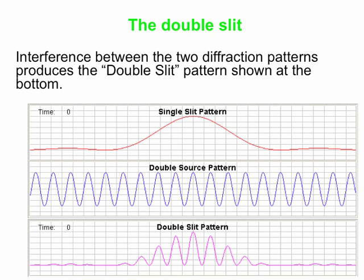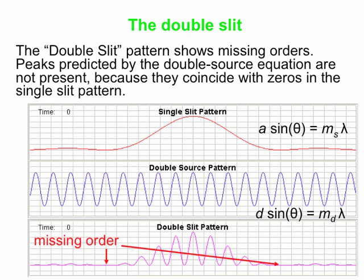And again, interference between the two diffraction patterns, one from each slit, produces the double slit pattern. And the double slit pattern actually shows what are called missing orders. So these are places where you expect peaks in the pattern to occur according to the double source equation, d sin θ equals m λ. But it turns out that neither one of the openings is sending out light in that direction anyway, because it corresponds to a zero in the single slit pattern. So you don't see any light there where you might expect some based on the double source equation. So these are known as missing orders.